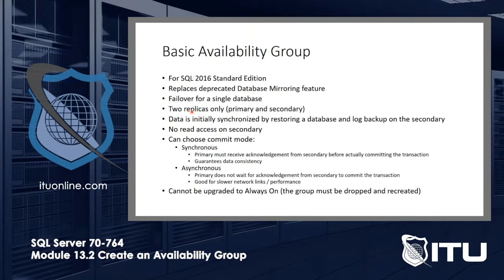Think of replica as a copy — but not just the secondary one. Replica means primary or secondary; it's the one with a copy of the database. So you'll have a primary and a secondary, and they're both called replicas. The data is initially synchronized by restoring the database and log backup on the secondary. The only downside is that you can't read the secondary — it's always in no-recovery mode. But you can choose how you want to commit: synchronous or asynchronous.